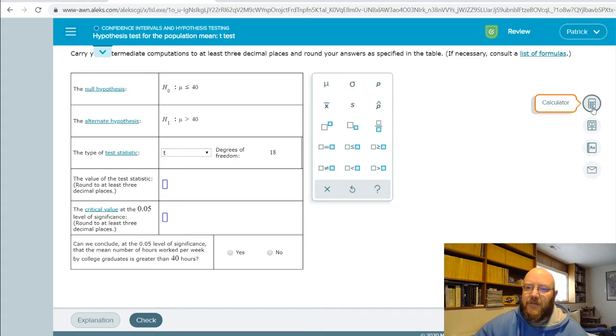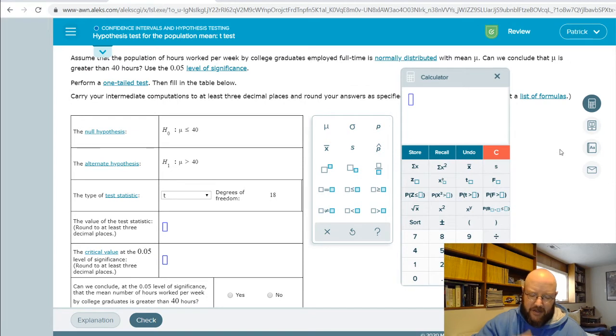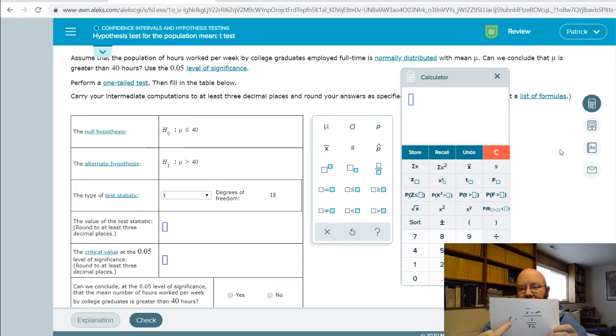So value of the test statistic on this one. We can calculate that using the Aleks calculator real fast here using this formula. T is exactly like the Z formula with one little change. So T equals X bar, which is our sample mean, minus our population mean, all over sample standard deviation. So this is S, sample standard deviation, divided by the square root of our sample size, so N.